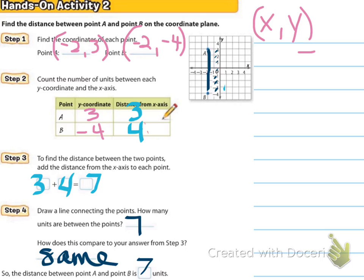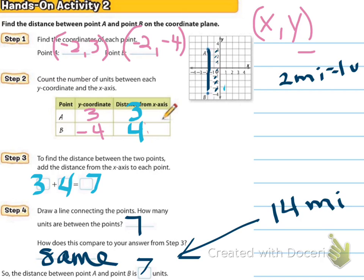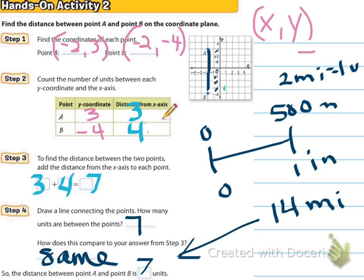As we go along, you might see a problem that says something like two miles equals one unit. If I asked you how far away this was, you'd say that's 14 miles away because each unit represents two miles. Think of a map — a map gives you a scale where, say, one inch on the map equals 500 miles, and then you figure out how many miles something is based on that scale.